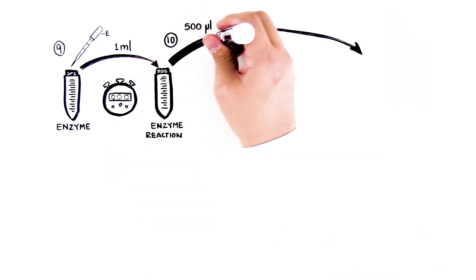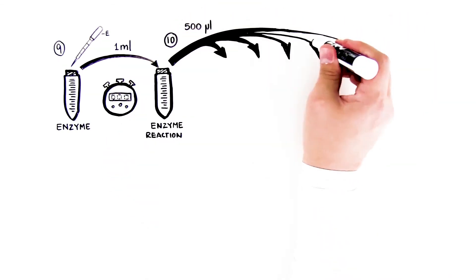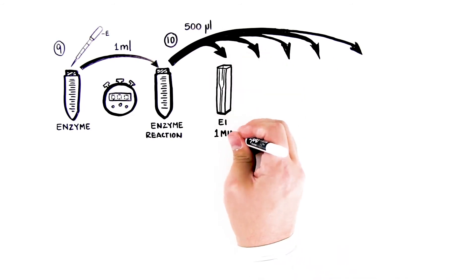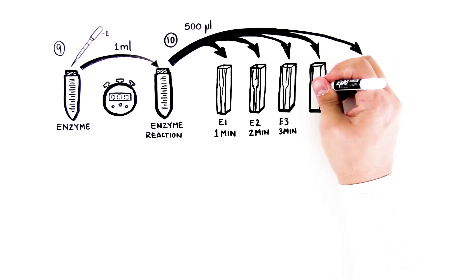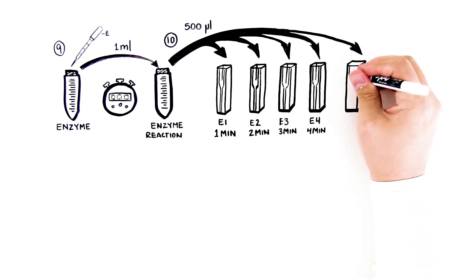Step 10: At the times indicated, use the DPTP labeled E to remove 500 microliters of solution from the enzyme reaction tube and add it to the appropriately labeled cuvette containing the stop solution.